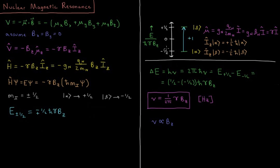If we graph this, the alpha state is lower energy and the beta state is higher, with minus one half and plus one half in units of ħ·γ·Bz.